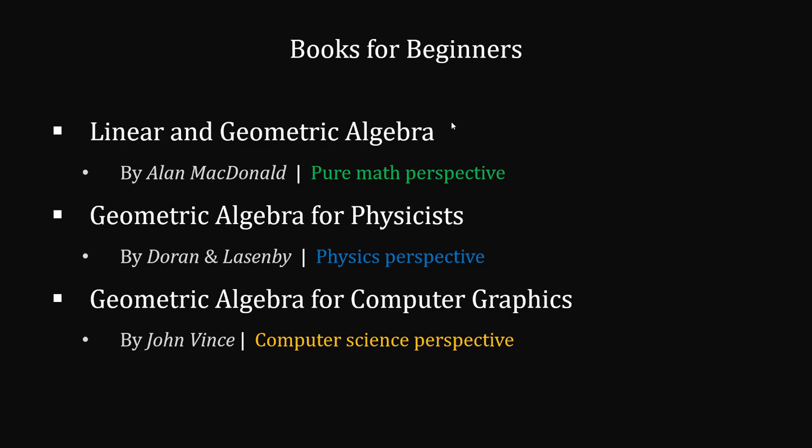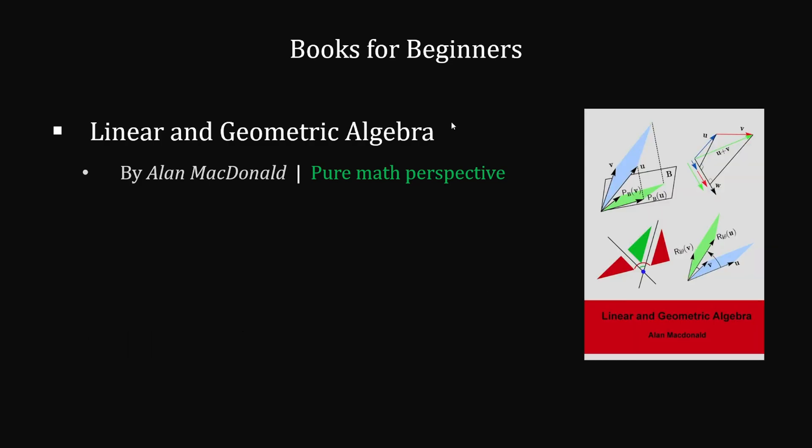All three of these books are excellent for beginners, but they approach the subject from very different perspectives. Linear and Geometric Algebra by Alan MacDonald is a great textbook for someone who's mostly interested in the mathematics over the application. It's also a great refresher on linear algebra. I like the way the book is written, but I'm not a huge fan of his visual formatting, as I feel my eyes are a little overwhelmed by each page. But it's still an excellent book, especially for those new to the subject.